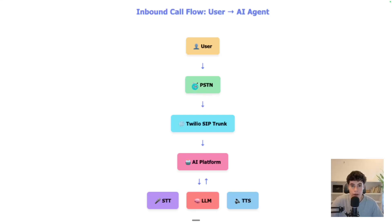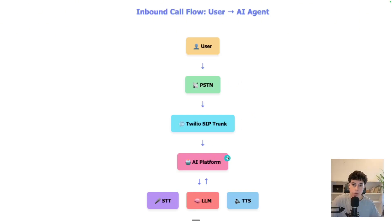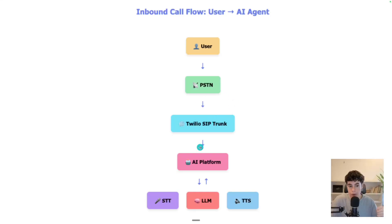From there within that network, the user has called a number, and that number is associated to Twilio — the platform we're going to be using to buy that number. Once Twilio receives that connection, it notices the number is associated to our SIP trunk. The SIP trunk is essentially the process of connecting the PSTN network to our AI platform. For inbound, we use something called a SIP URI, which creates an inbound connection. For outbound, we use something called a termination. Those are the two differentiating factors between an inbound and an outbound call.